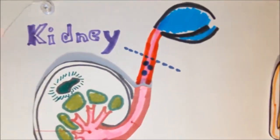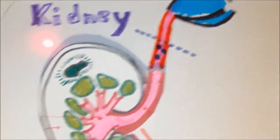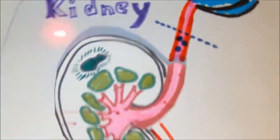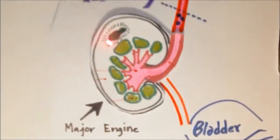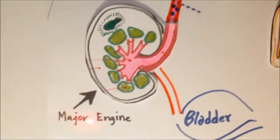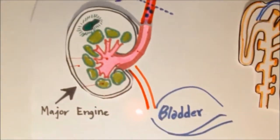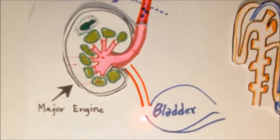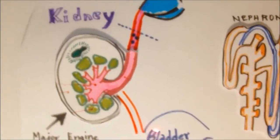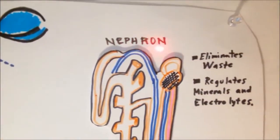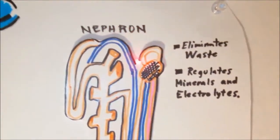Now when we look at the urinary system, we all know that the kidneys are the major engine that runs the system. But if we break down the kidneys into its basic anatomical units, we know that the nephron plays the biggest role.